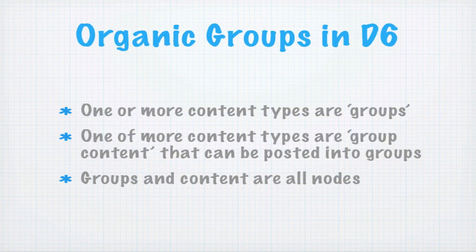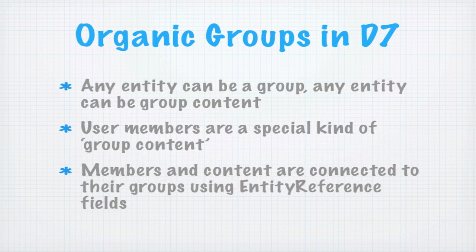In Drupal 6, Organic Groups worked a bit differently. You could have one or more content types that were groups, and one or more content types that were group content that could be posted into groups. But everything — all the groups and all the content — were nodes. In Drupal 7, it's different: any entity can be a group, and any entity can be group content. A node is one type of entity, but there are many other types of entities in Drupal 7, such as taxonomy terms and lots of other things depending on how your site is configured.